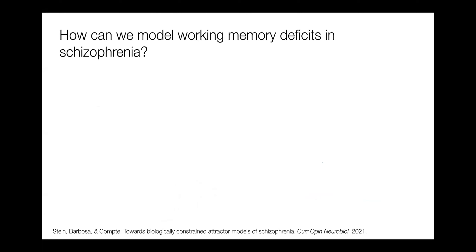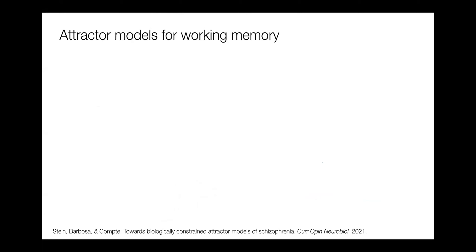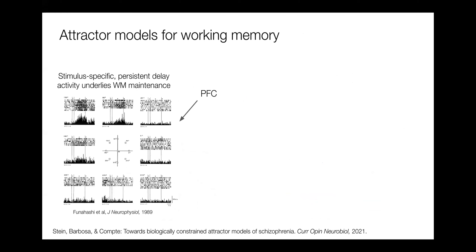How can we try to model these working memory deficits? A very useful framework for this are attractor models. These attractor models have been founded upon a very important observation from the primate study from the late 80s, where researchers recorded neurons in prefrontal cortex and presented stimuli at different locations on the screen. What they found was that these recorded neurons were tuned to specific stimuli — this neuron responds most strongly for the upper left location. A second important feature is that neurons were active throughout the whole delay period, keeping this persistent stimulus-specific activity.